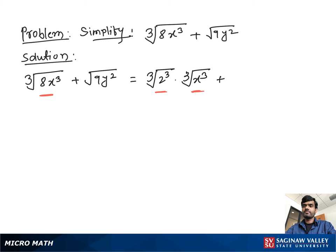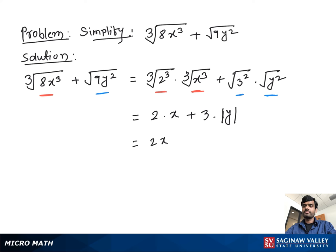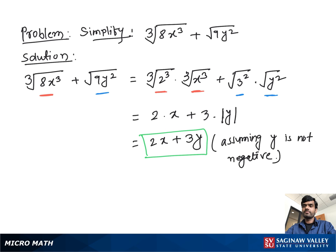We simplify y² as square root of 3², which is 9, times square root of y². Then we get 2 times x plus 3 times absolute value of y, because y may be negative, so we take the absolute value of y. We can write this as 2x + 3y, assuming y is not negative.